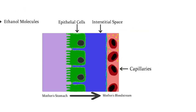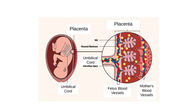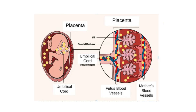Once in the bloodstream, the alcohol travels to the placenta, which separates the mother's blood supply from the fetus's. The alcohol then diffuses into the fetus's blood supply. This poses a problem because, while the mother will be able to metabolize and break down the alcohol, the fetus will maintain a high blood alcohol concentration for prolonged periods, due to reduced ability to metabolize substances.